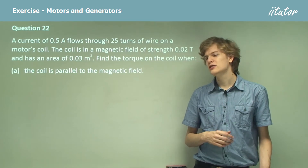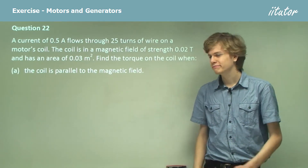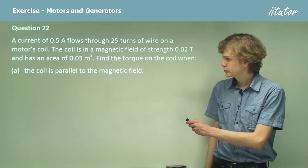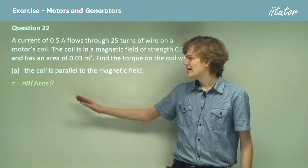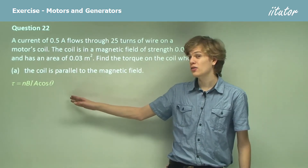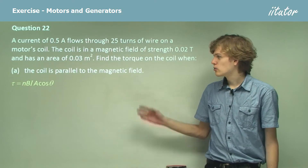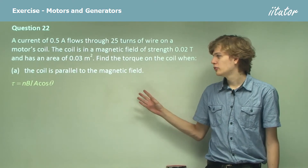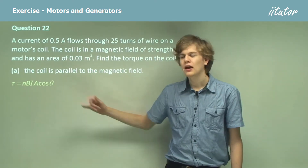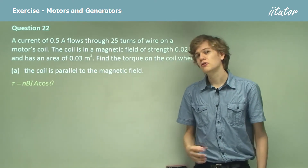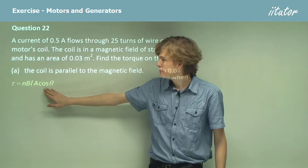The equation for torque is: torque equals NBIA cosine theta. If the coil is parallel to the magnetic field, then theta will be 0, and the cosine of 0 is 1, so we don't need to worry about that factor.